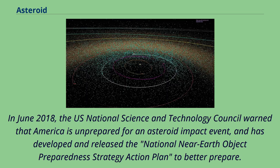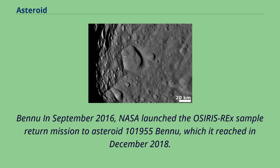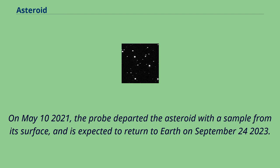In June 2018, the U.S. National Science and Technology Council warned that America is unprepared for an asteroid impact event, and has developed and released the National Near-Earth Object Preparedness Strategy Action Plan to better prepare. In September 2016, NASA launched the OSIRIS-REx sample return mission to asteroid 101955 Bennu, which it reached in December 2018. On May 10, 2021, the probe departed the asteroid with a sample from its surface, and is expected to return to Earth on September 24, 2023.